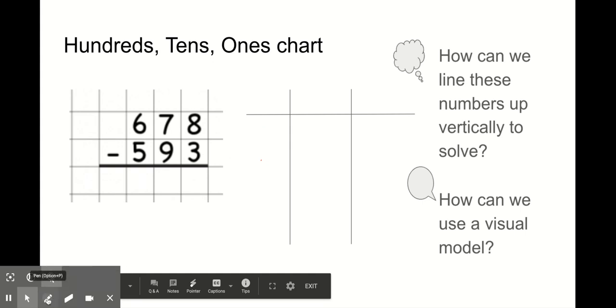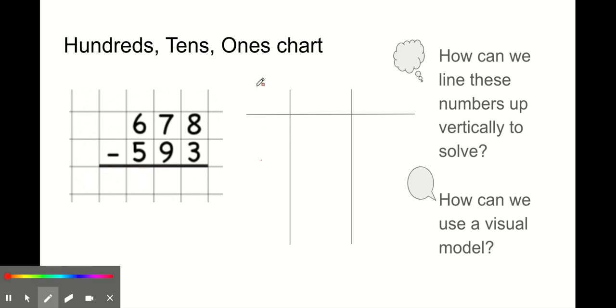Alright, time for one more strategy. In this hundreds, tens, ones chart, we're going to use place value disks. Now you might remember using actual place value disks at school. At home, it's a little bit different. You'll have to draw them. It's similar to the hundreds, tens, ones blocks that we saw. But this way, you can sort of visualize it in a little bit of a different way.